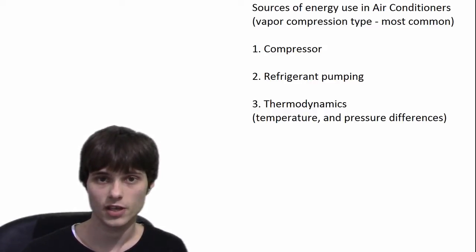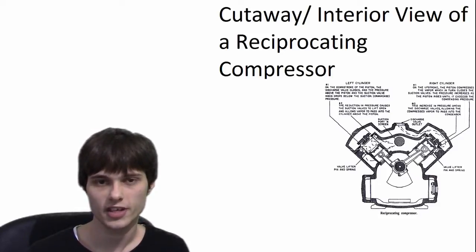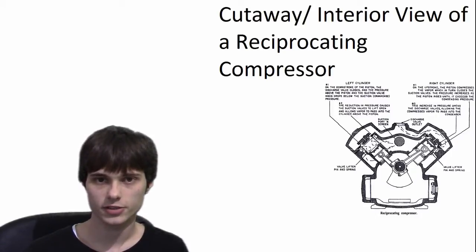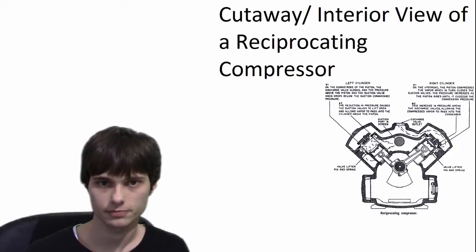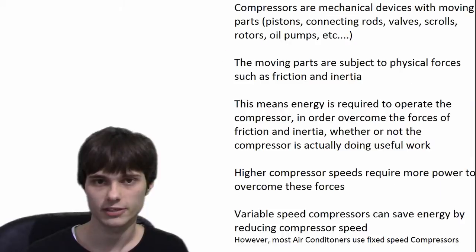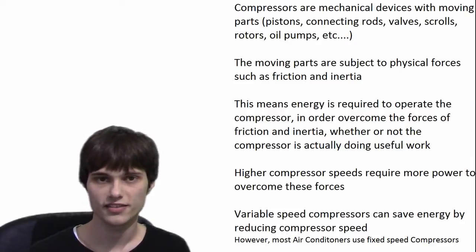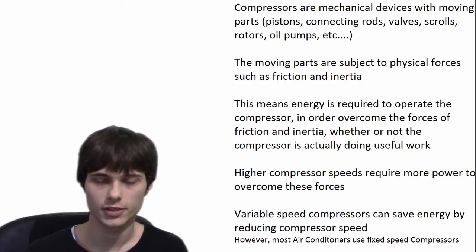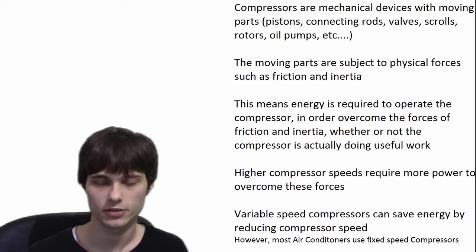If you have an air conditioner and it uses a vapor compression cycle — and again, you probably do — then that means it needs to have a compressor to compress and move the refrigerant through the system. Compressors are mechanical devices. They have a lot of moving parts. Being mechanical devices with a lot of moving parts means energy is required to move the parts around. The mechanical parts are subject to physical forces like friction and inertia. Anything that moves — in order to move it, you actually have to exert energy. Compressors are no different. If you have a reciprocating compressor, you've got pistons and connecting rods with a crankshaft and an oil pump. All of these components require energy to move.